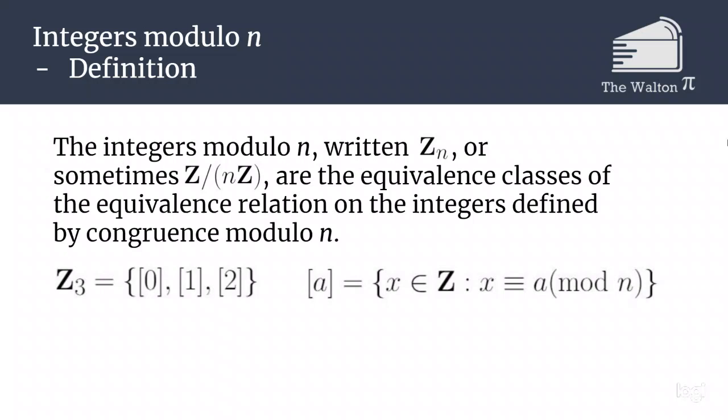If we are looking in Z_3, the class of 1 is going to include negative 5, negative 2, 1, 4, 7, and so on, where we can continue to add 3 to get other entries like 10 or 13 or 301. All of those are going to be elements of the class of 1.